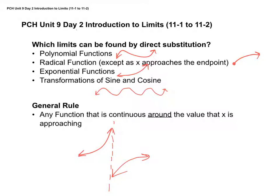But if I had x approaching, say, x equals 5, and I know the function is continuous around 5, then I can just plug 5 into the function to figure out what the limit equals. This saves a lot of work — if you recognize that it's continuous around that point, you can just plug in the number.